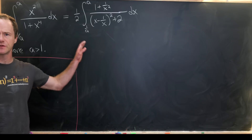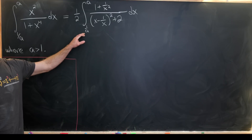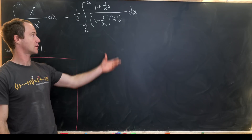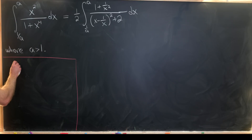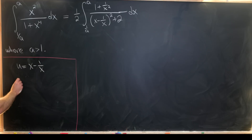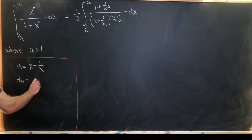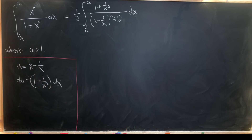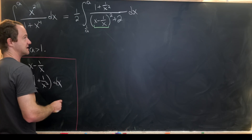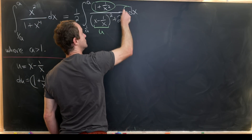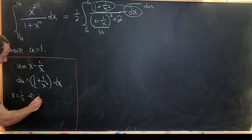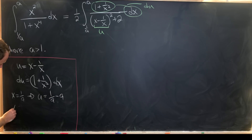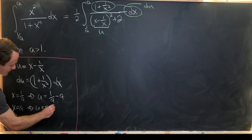Picking up from what we've built: we have half the integral from 1 over a up to a of (1 plus 1 over x squared) over (x minus 1 over x) squared plus 2. That motivates a final substitution: let u equal x minus 1 over x. Then du equals (1 plus 1 over x squared) dx by the power rule — the numerator creates what I call the 'du earmuffs'. When x equals 1 over a, u equals 1 over a minus a, and when x equals a, u equals a minus 1 over a.